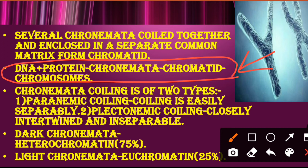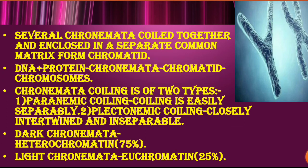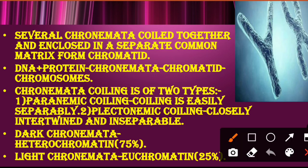Chromonema coiling is of two types. First is paranemic coiling — where coiling is easily separable. If there is paranemic coiling, we can easily unwind and separate it. But if it is plectonemic coiling, then the chromonema will be very closely intertwined and inseparable. So first coiling is easily separable and second coiling is inseparable.